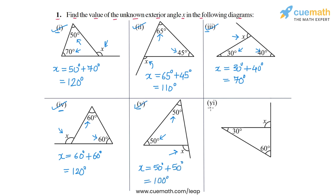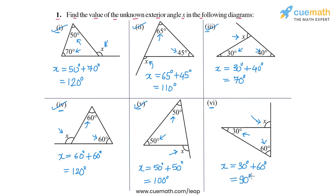And finally in part six, x is this exterior angle and the opposite interior angles are 30 degrees and 60 degrees. So x will be equal to 30 degrees plus 60 degrees, or x will be equal to 90 degrees. So this is the answer for part six.